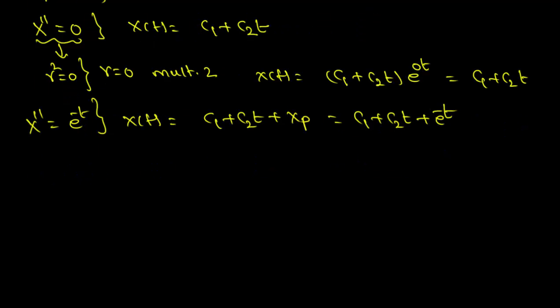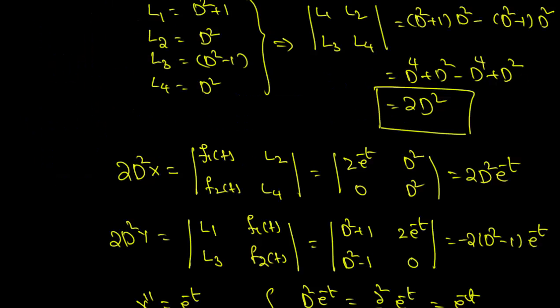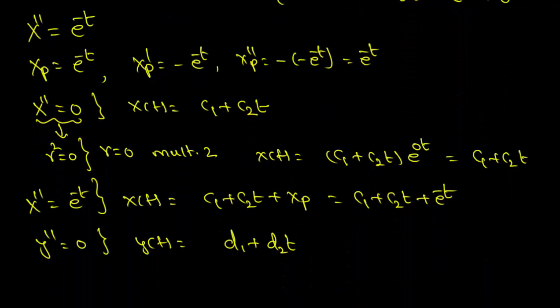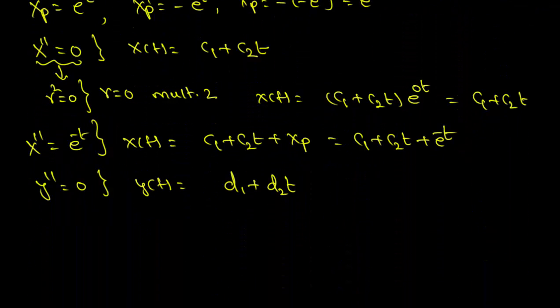And y'' = 0 has solution y(t) = d1 + d2·t. Now we see that we have four arbitrary coefficients c1, c2, d1, d2, but since the operational determinant is of second order (2D²), we should have only two arbitrary coefficients, so two of the four are redundant.